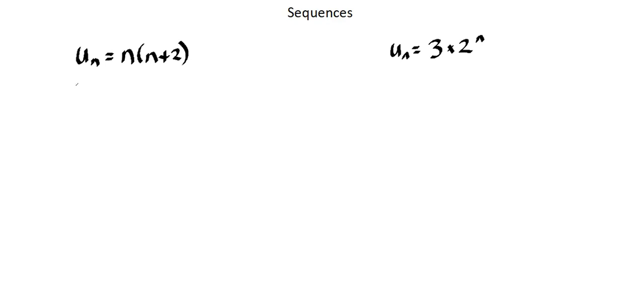So I can begin. One thing I can do is I can find perhaps the first two terms of each sequence. In this case, u1 is 1 in place of n. So 1 times 1 plus 2, 1 times 3 equals 3.